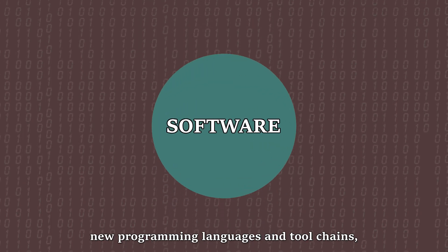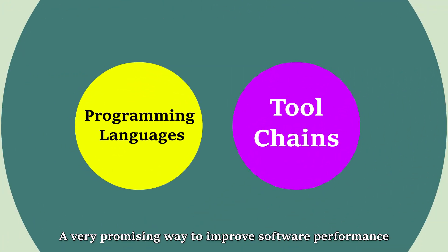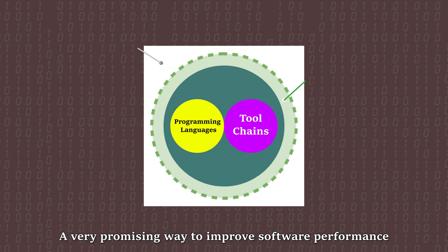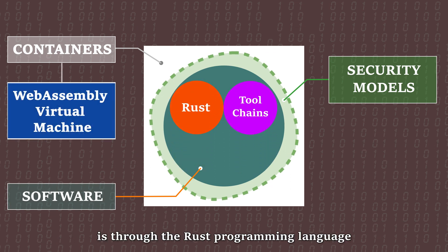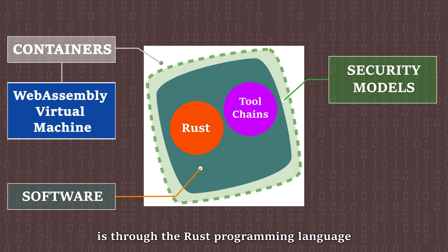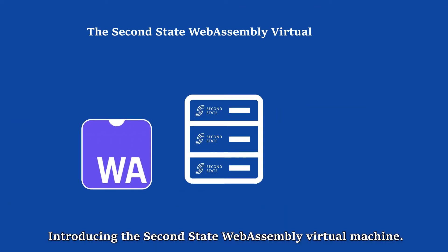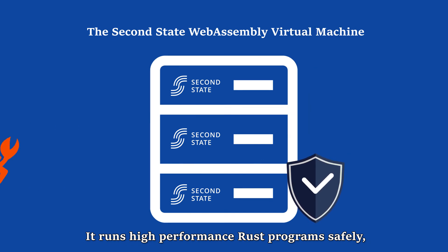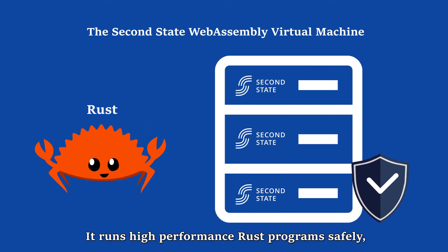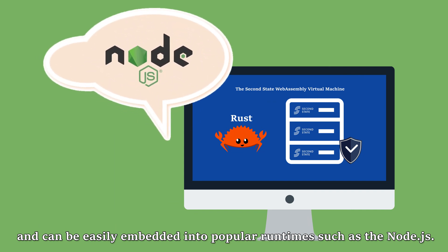The answer lies in lightweight software containers, modern container security models, and new programming languages and toolchains designed for performance. A very promising way to improve software performance without sacrificing safety is through the Rust programming language and the WebAssembly virtual machine — introducing the Second State WebAssembly Virtual Machine.